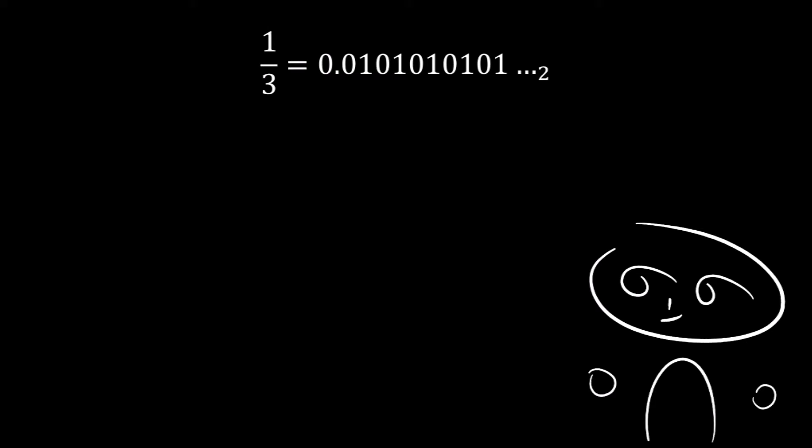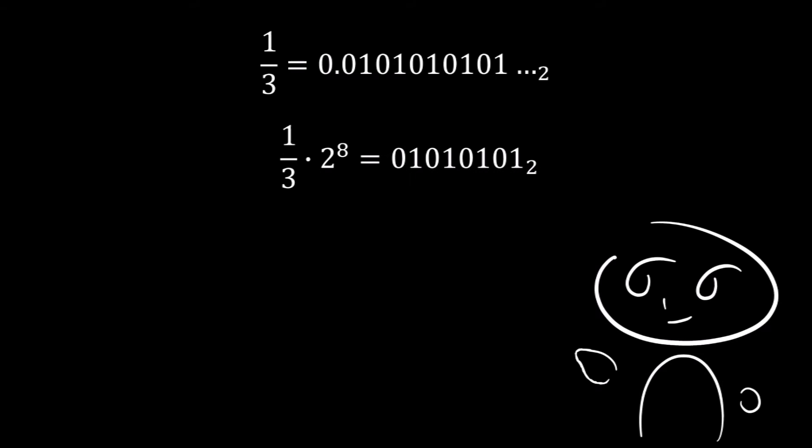If we take 1 third in binary and multiply it by 2 to the power of 8, and cut off everything below the decimal place, it gives us this value here, which is our 8-bit fixed point number representing 1 third.